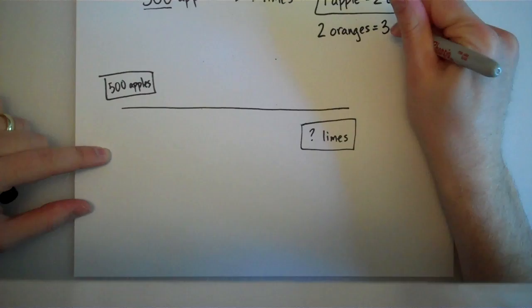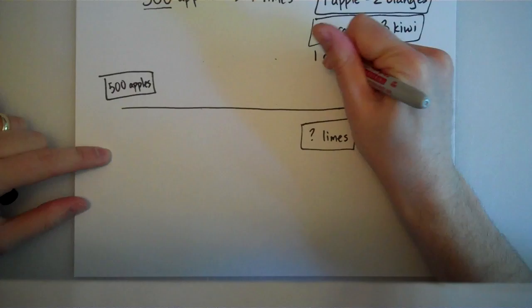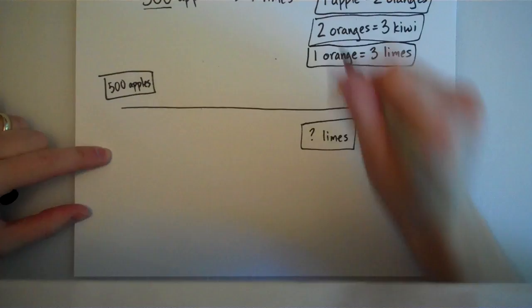Oh, I love kiwi. Anyway, let's see, a kiwi. And then someone else says, Well, for every one orange, I will give you three limes. So, each of those are now conversion factors. They're all dominoes. So, let's go ahead and set up our problem here.